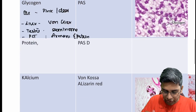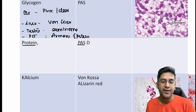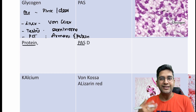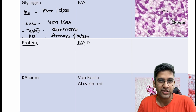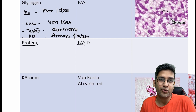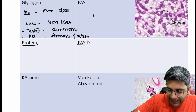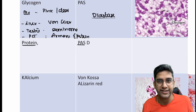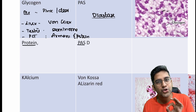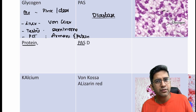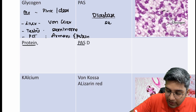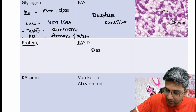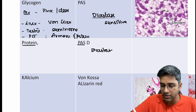Glycogen is positive for PAS stain. Unfortunately, protein is also positive for PAS. PAS gives a magenta color or a dark pink color, as you can see in this image. So how does a pathologist differentiate — is it PAS due to glycogen or PAS due to protein? It's a very simple technique: we use an enzyme called diastase. Diastase is an enzyme which destroys saccharides — a sugar-destroying enzyme. So, will it destroy glycogen? Yes — glycogen is diastase sensitive. Protein is diastase resistant, because obviously protein cannot be digested by a sugar-destroying enzyme.